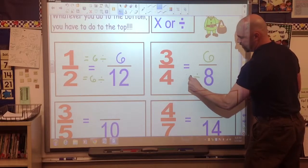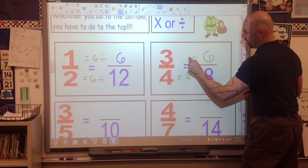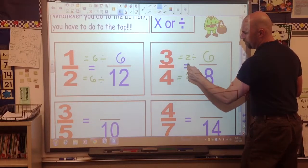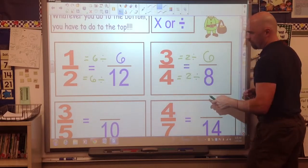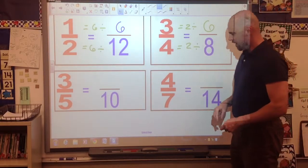All right? Divide by two. We're going to work backwards this way. It would give me four. Whatever I do to the bottom, I have to do to the top. Divide by two gives me three.